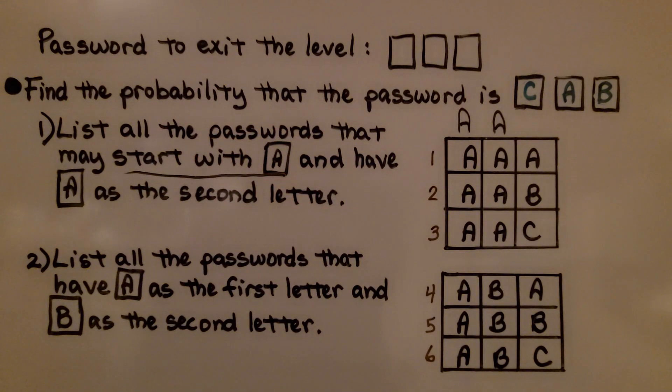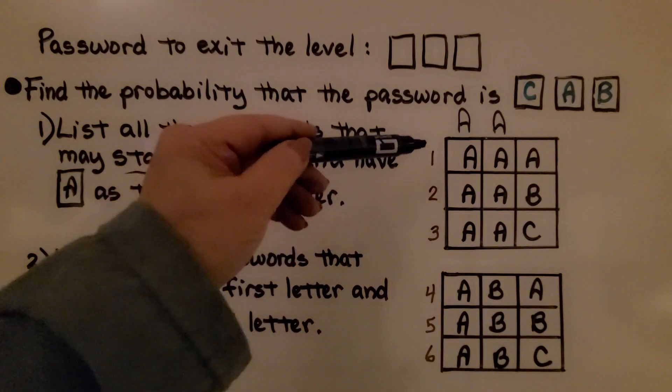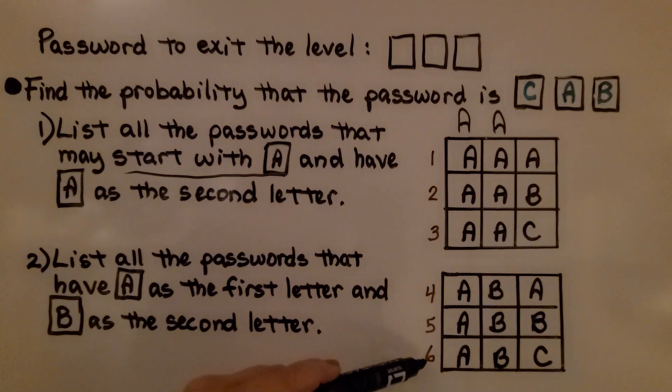Then we list all the passwords that have A as the first letter and B as the second letter. So, we have A, B, A, A, B, B, A, B, C. Now, we've got six different possible passwords.